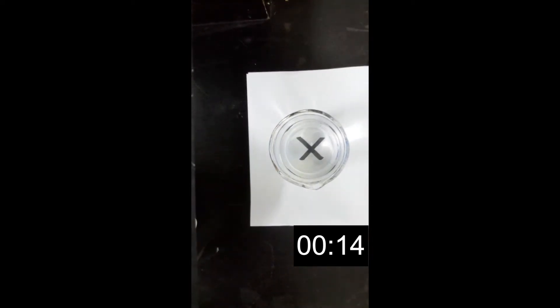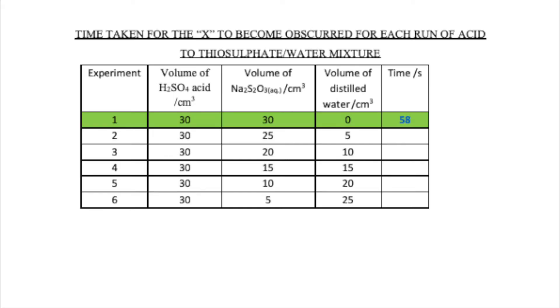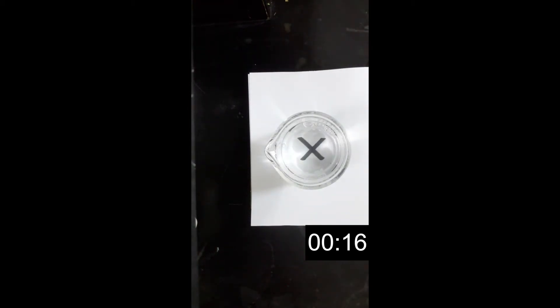We're going to look from above and stop the stopwatch the moment the cross disappears. In the second round, we will use 25 cm³ of sodium thiosulfate with 5 cm³ of water to make our volume up to 30 cm³. Again we start the stopwatch immediately and we wait for the cross to disappear.